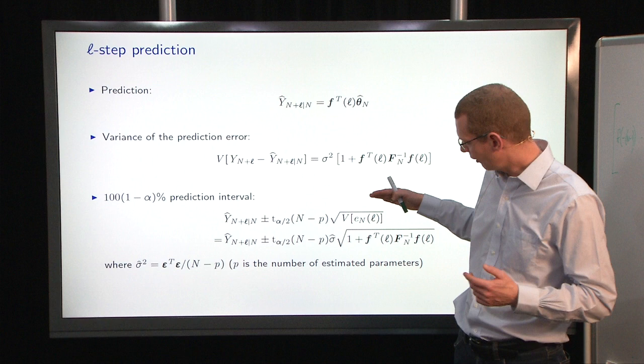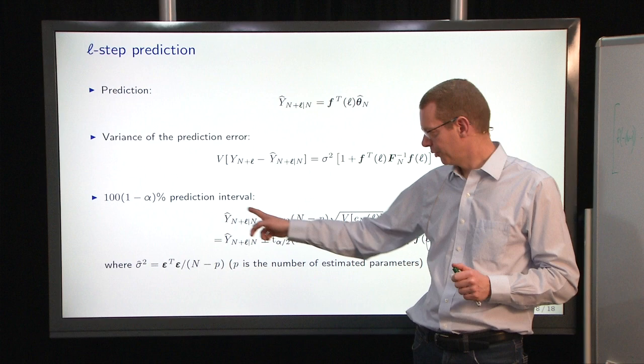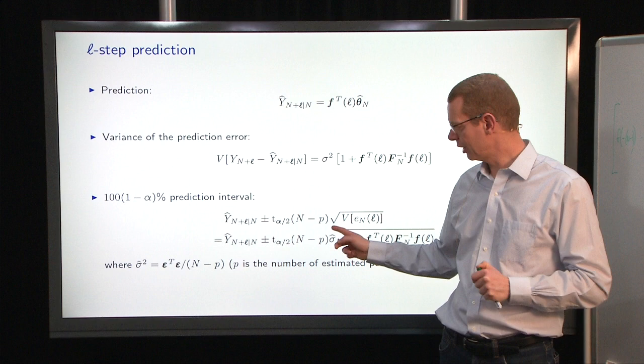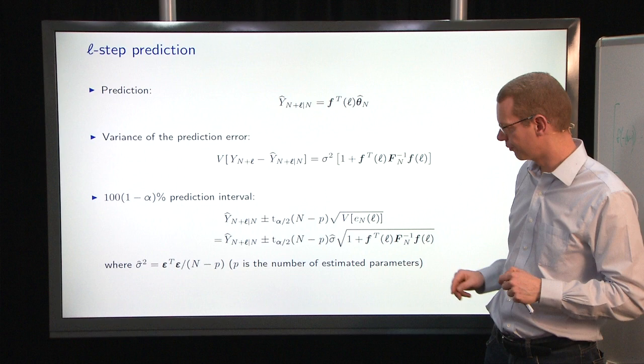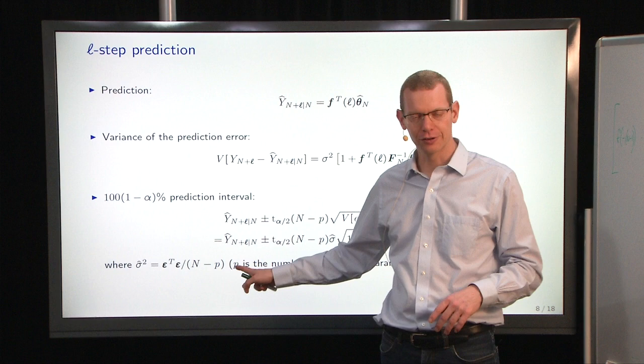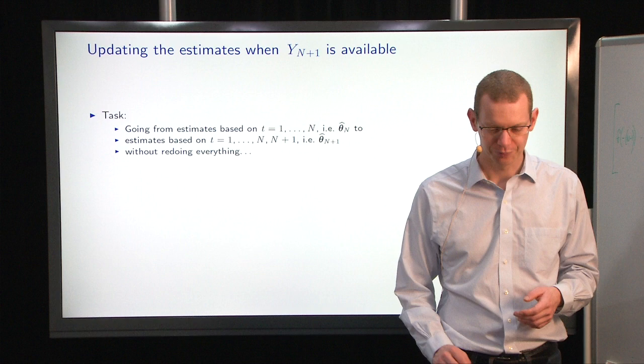So the prediction interval is again very much the same as what we looked at before. We need to look at the expected value, plus minus the quantile in the t-distribution, compared to how many degrees of freedom we have for the residuals, and then we multiply that by the standard deviation, and that's the expression that we have up here from just the square root of what we have up here. So that's basically how we have it. P is as always the number of parameters that we estimated, and we're good to go.